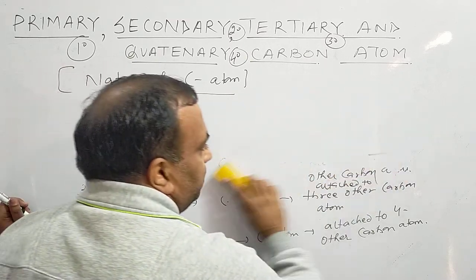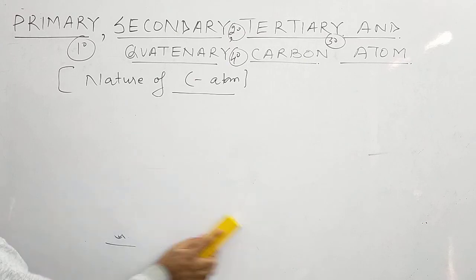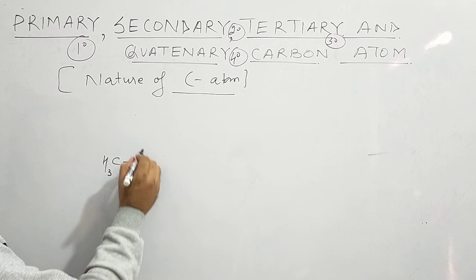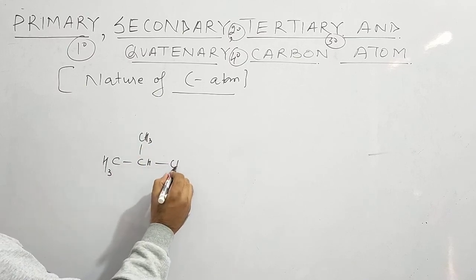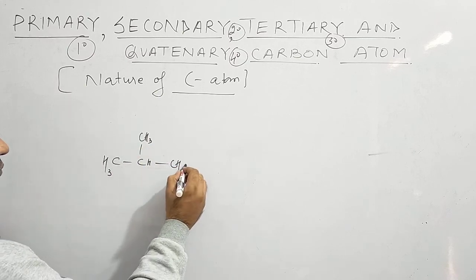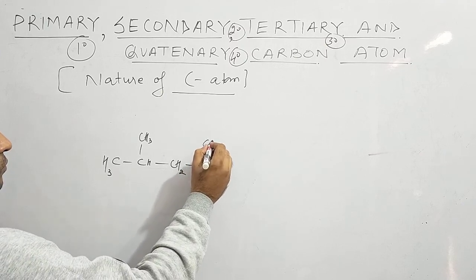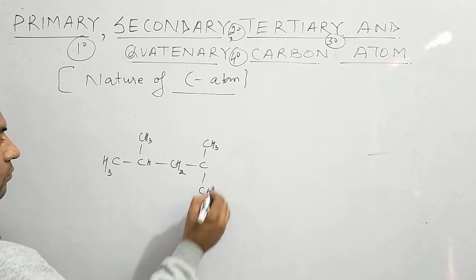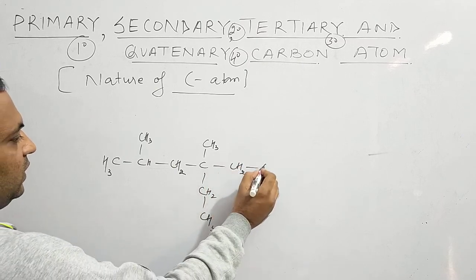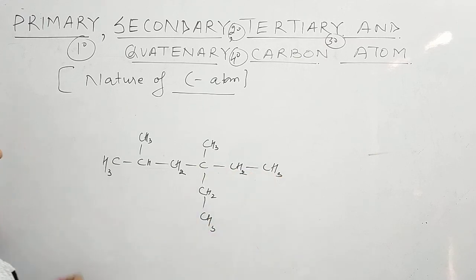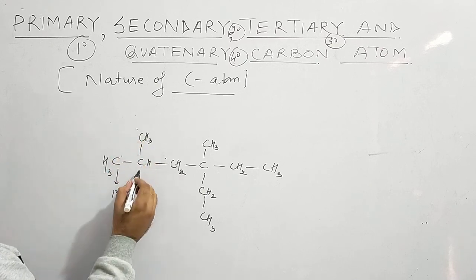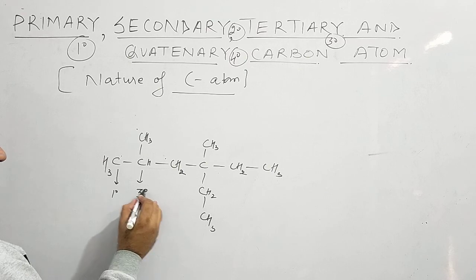Now let us see one example to explain this. Looking at the structure: this carbon atom is attached to one carbon atom — this is a primary carbon atom. This carbon atom is attached to one, two, and three carbon atoms — this is a tertiary carbon atom.